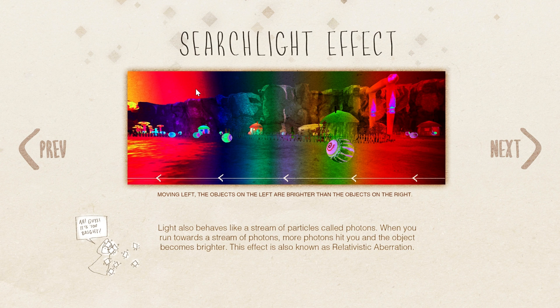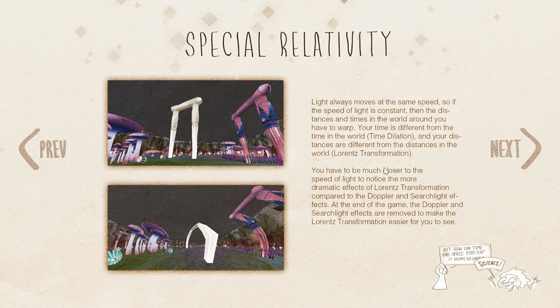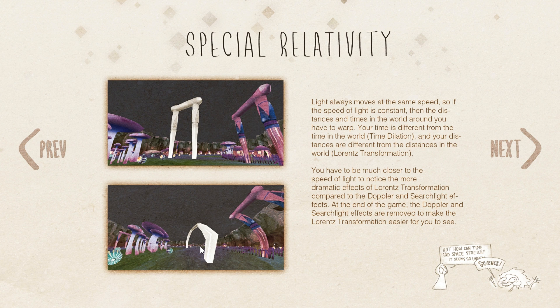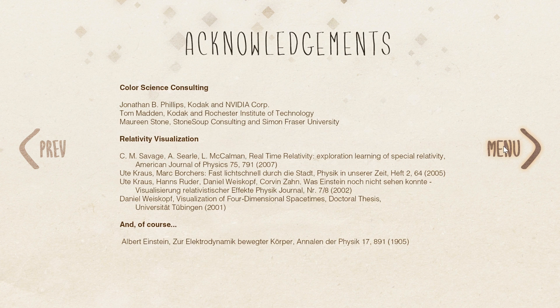You can read more about this as you play the game yourself, and I totally recommend playing it yourself. The game also explains the so-called searchlight effect — moving to the left, objects on the left are brighter than objects on the right. The better term for this is relativistic aberration. The so-called stretching effect is also known as the Lorentz transformation — what you experience when you move towards something and it gets stretched into almost infinity. The closer you are to the speed of light, the more likely it's going to be infinity.